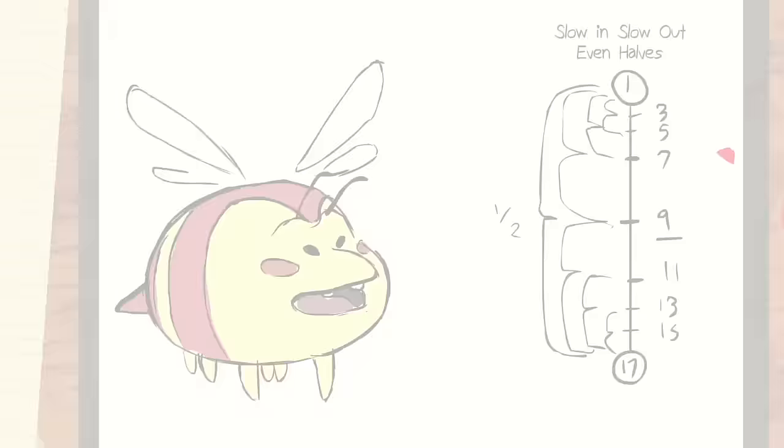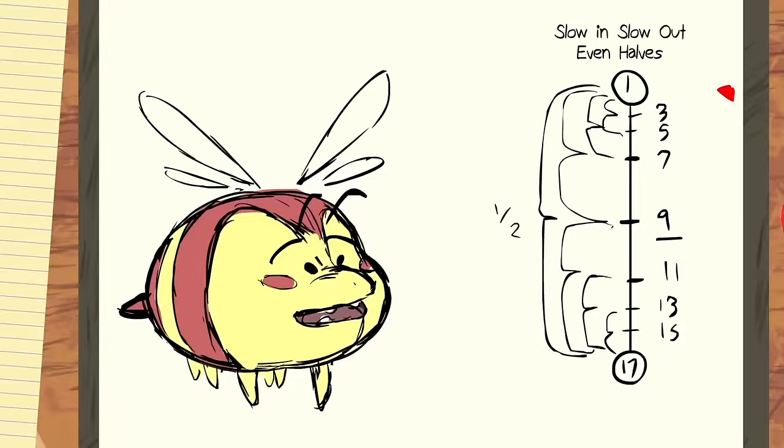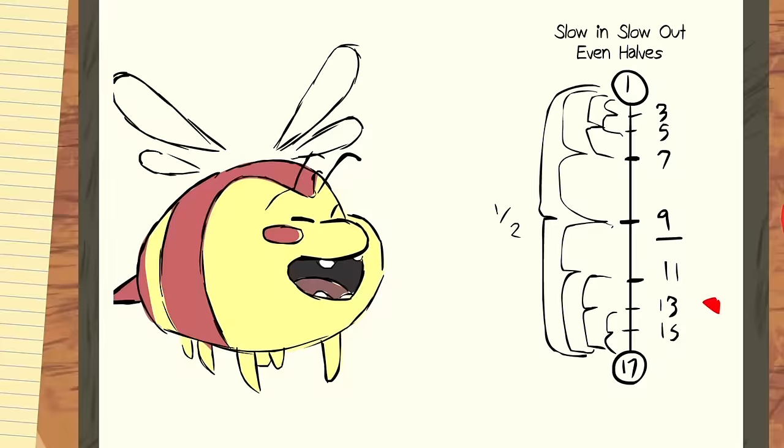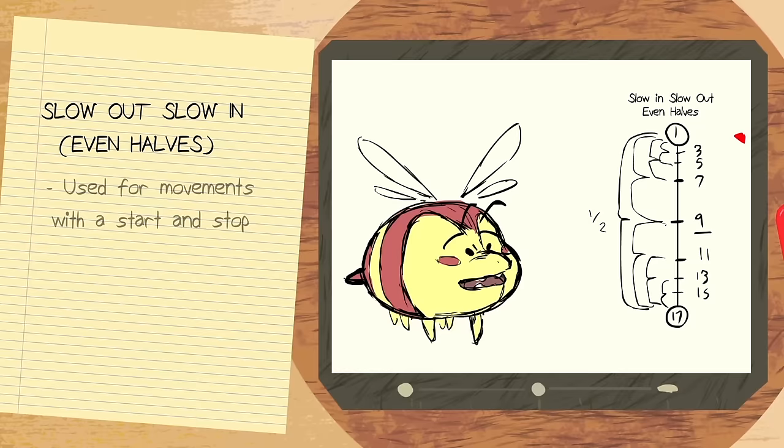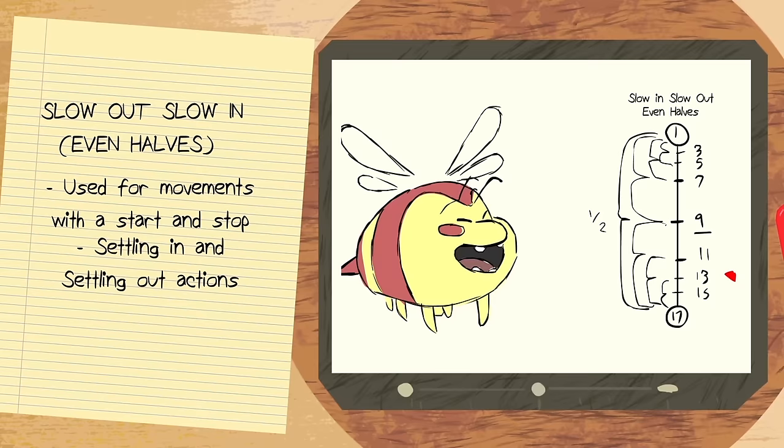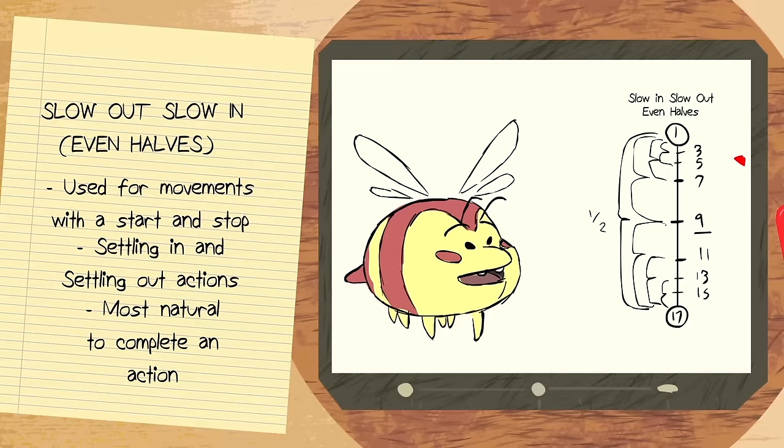Our final example is basically a combination on how you can combine two timing charts into one. For this case, I used the slow out and slow in. It starts slow, gains speed, goes fast, and then slows down. One could argue that these types of movements are the most natural, since it shows the subject gaining speed and then finally slowing down to a rest. This type of stuff is great for takes, emotional responses, pose A to pose B movements, settling in and settling out. When you think about combining or implementing charts, the more options you open up yourself to.